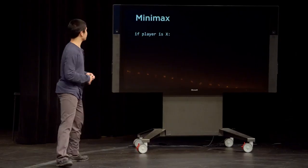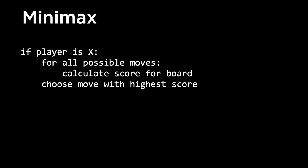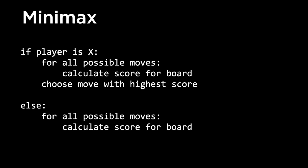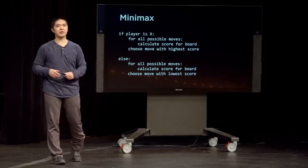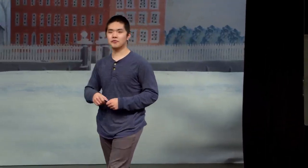We can formulate Minimax as pseudocode: if the player is X, then for all possible moves, calculate a score for that board by recursively following all possible moves. Choose the move with the highest score. Otherwise, if the player is O, for all possible moves, calculate a score for that board, and choose the move with the lowest score. X picks the move that maximizes the score; O picks the move that minimizes the score. Using this approach, you can create an AI that can play tic-tac-toe perfectly — it'll never lose if programmed correctly.